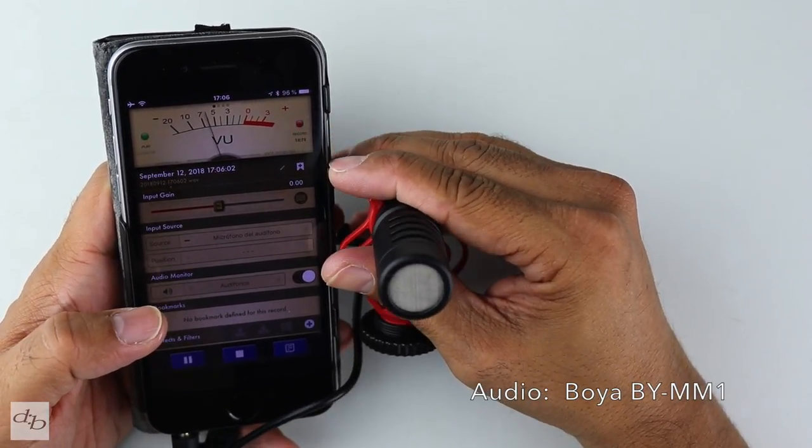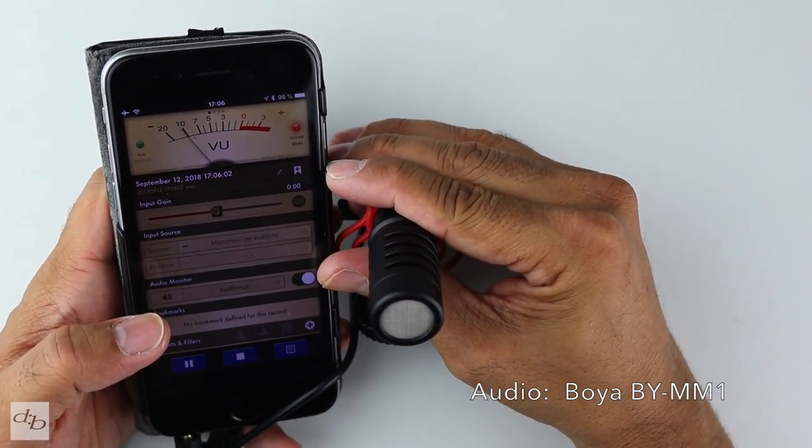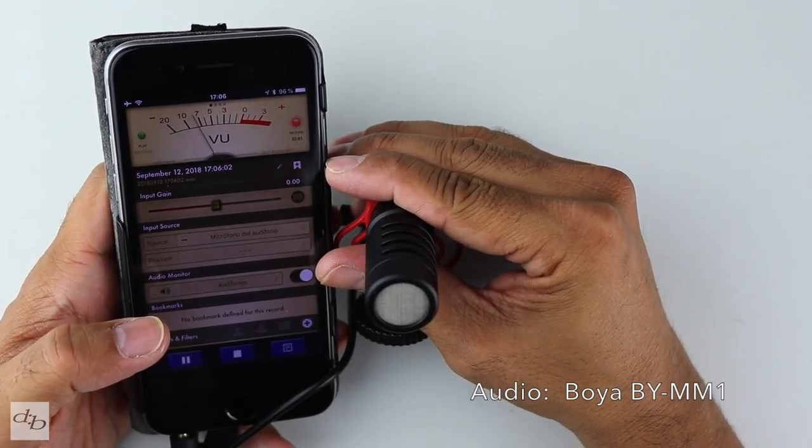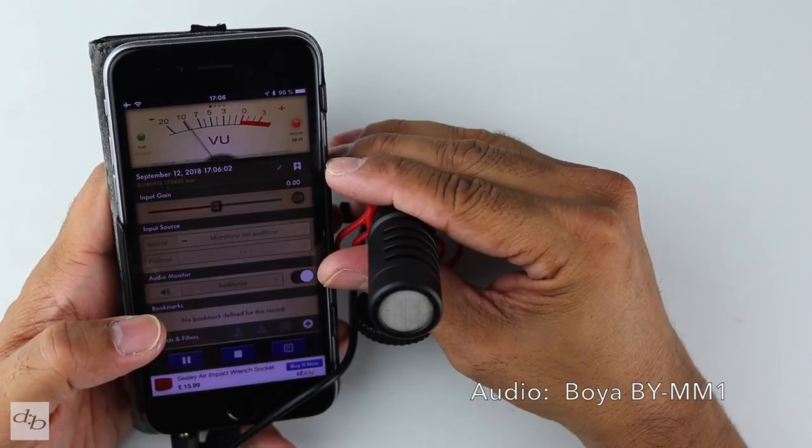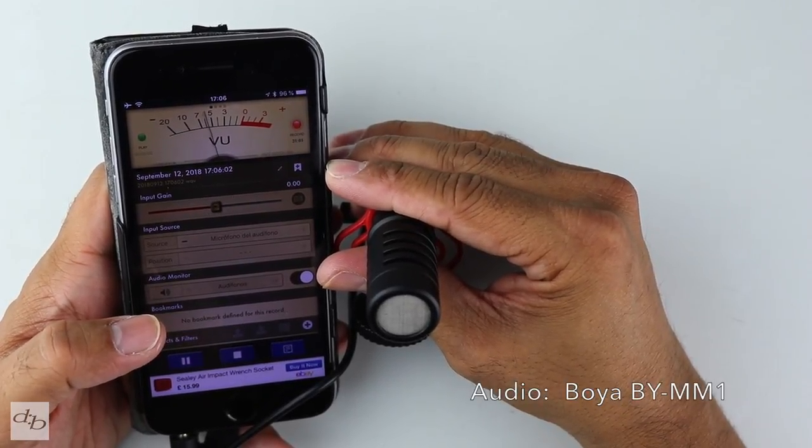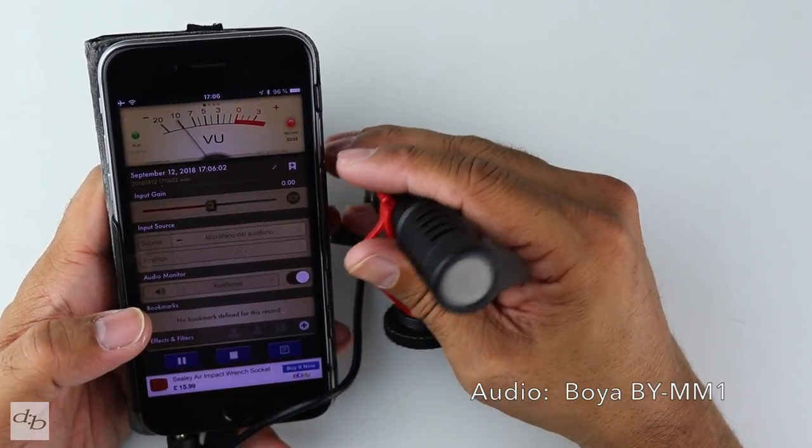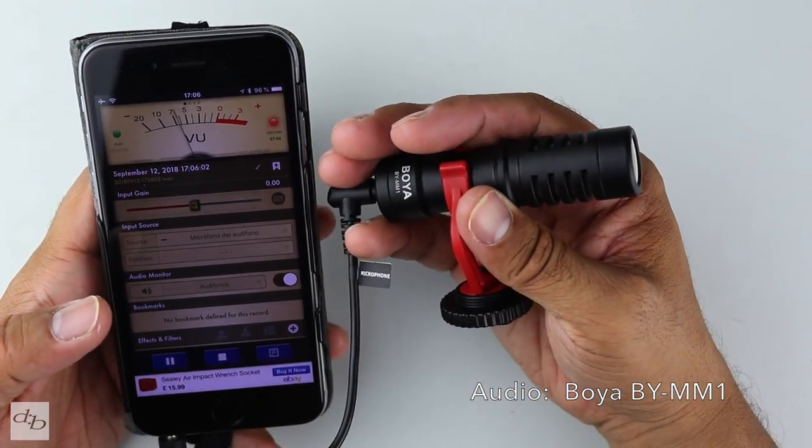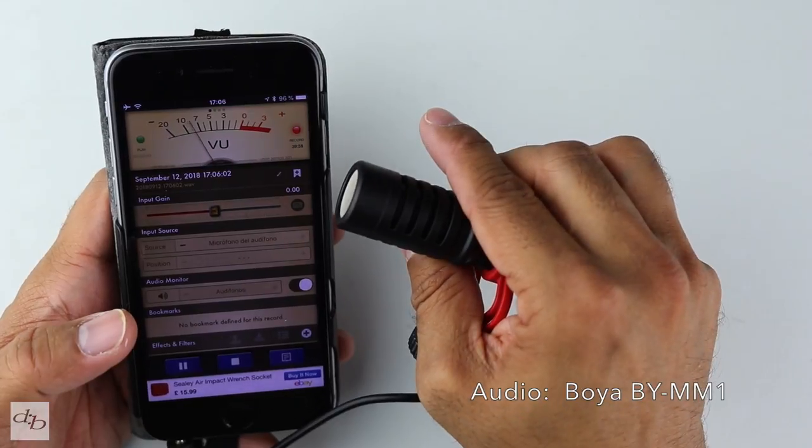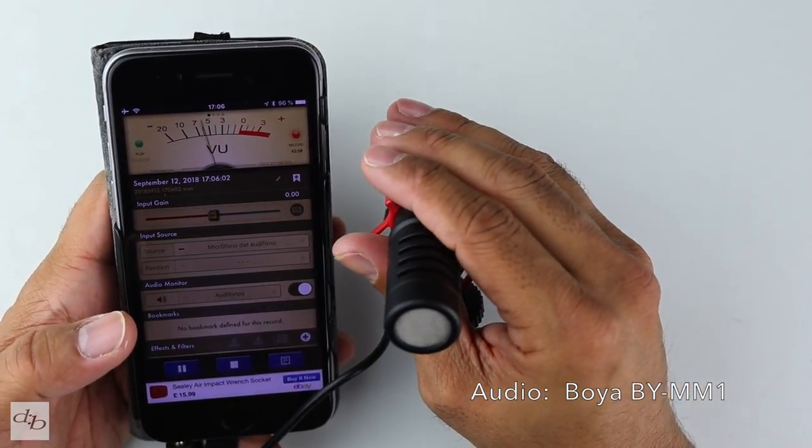Now the mic being about a good arm's length away from the source, my mouth, me talking. Obviously if I bring it closer, you're going to hear a fuller sound. But this is the kind of thing that as I turn it to the sides, you might hear some difference in the audio because it's cardioid, but it's relatively directional.